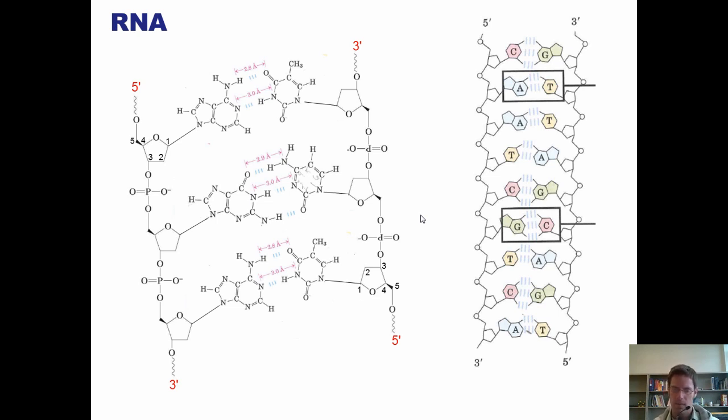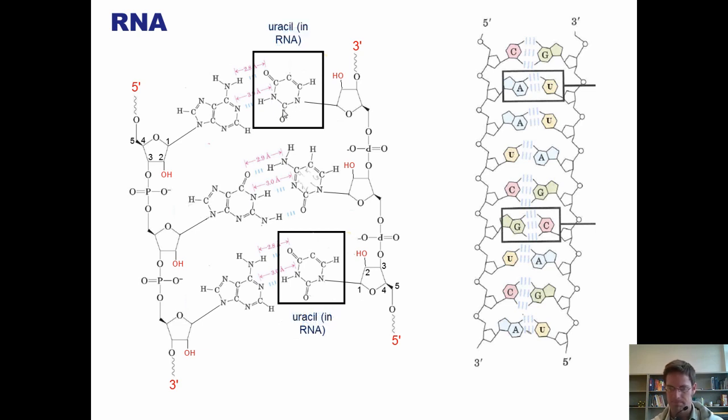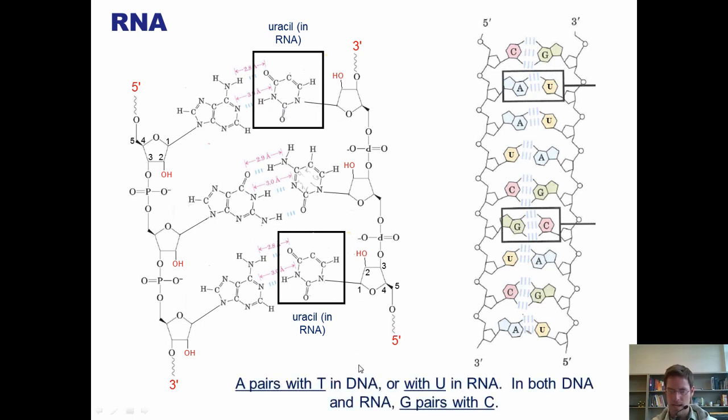Structurally speaking, RNA, which is short for ribonucleic acid, looks very, very much like DNA with two major differences. First of all, RNA has hydroxy groups, these OH groups, at the C2 position of each ribose sugar in its backbone. DNA stands for deoxyribonucleic acid. Why does it have deoxy in its name? Well, it's because DNA lacks the 2' hydroxyl group found in RNA. Second, you'll notice that where DNA has thymine as its complementary nucleotide base to adenine, RNA substitutes uracil in thymine's place. Thus, in DNA, A pairs with T, and in RNA, A pairs with U. In both DNA and RNA, G pairs with C.